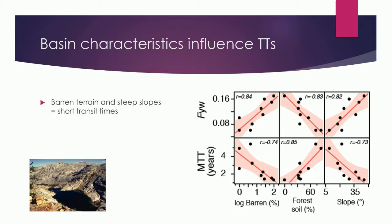Those predictive models rely on relationships between basin characteristics and what we're trying to predict. We've got young water fraction and mean transit time on the y-axis, and basin characteristics on the x-axis: percent barren in the watershed, percent forest soil, and average basin slope. When you have a lot of barren terrain in the watershed, you tend to have short transit times. Same thing for steep slopes. Conversely, when you have a lot of forest soil, your transit times tend to be relatively long.